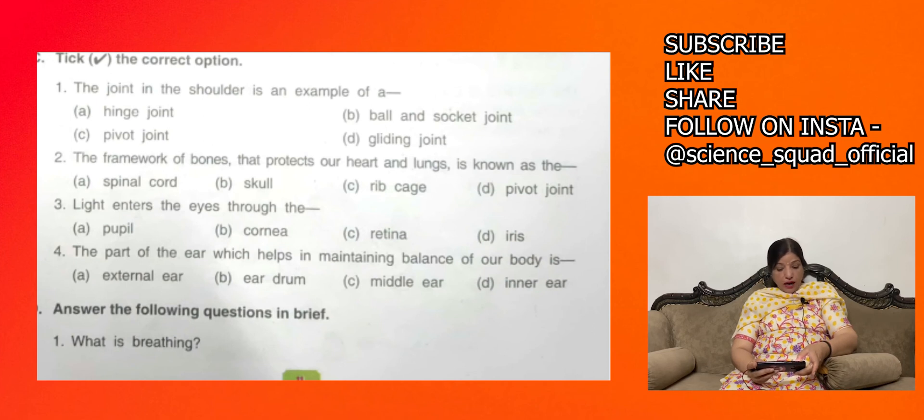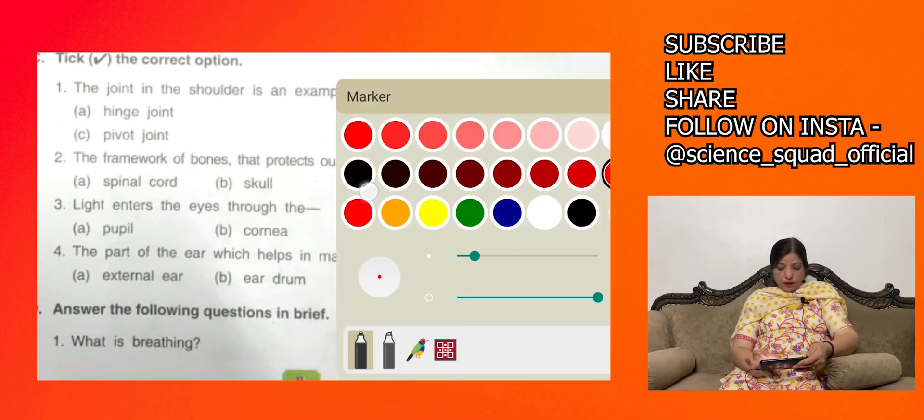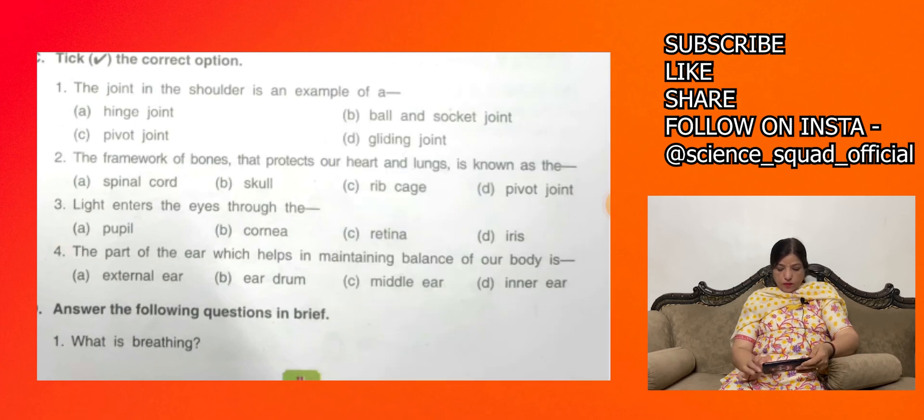Rib cage. Next is light enters the eye through the - retina, pupil, cornea. Kaan center karti hai? Yes, the right answer is your pupil.